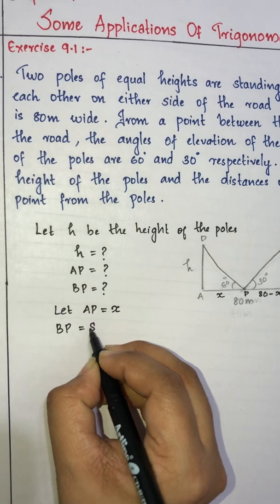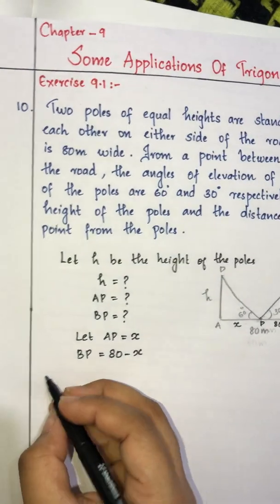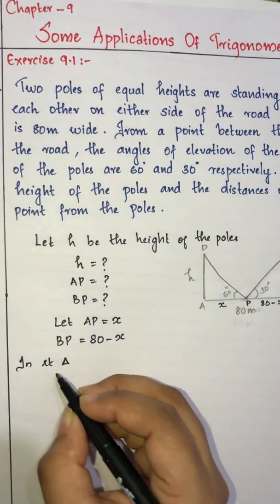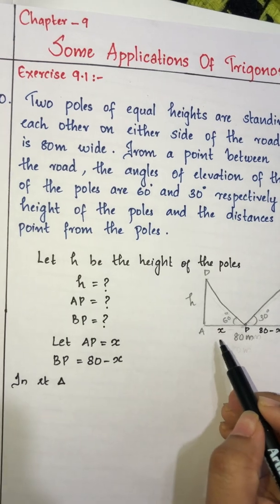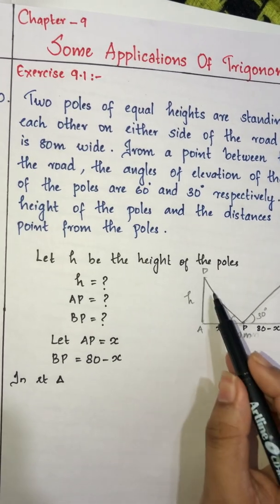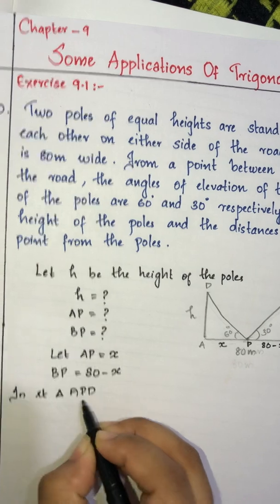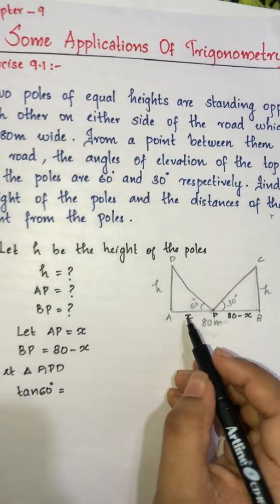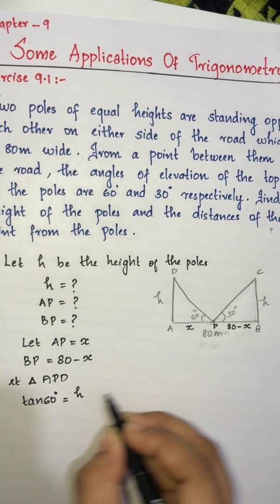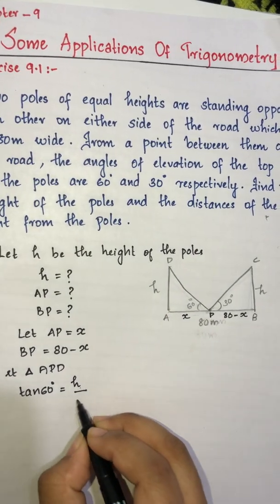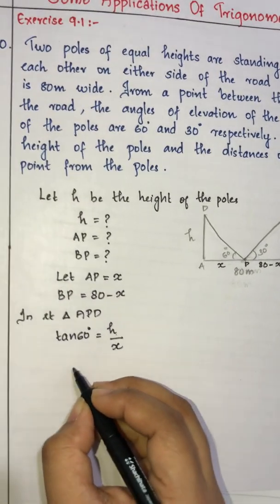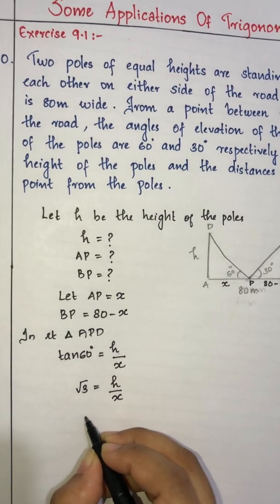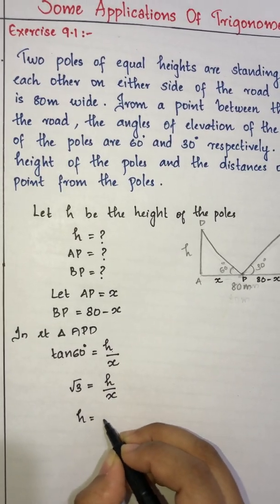Let us consider the first right triangle APD. tan 60° is equal to opposite side over adjacent side, so root 3 is equal to h divided by x, and therefore h is equal to root 3 into x. Let us consider this as equation 1.